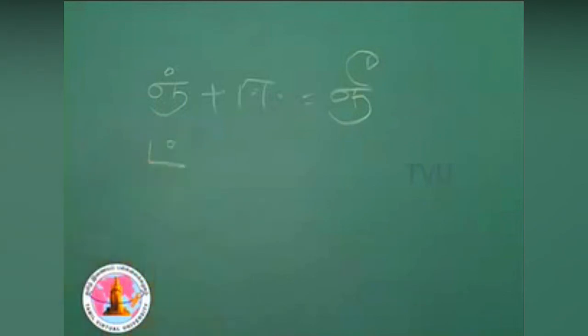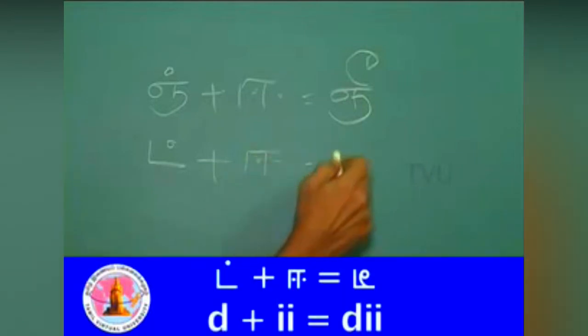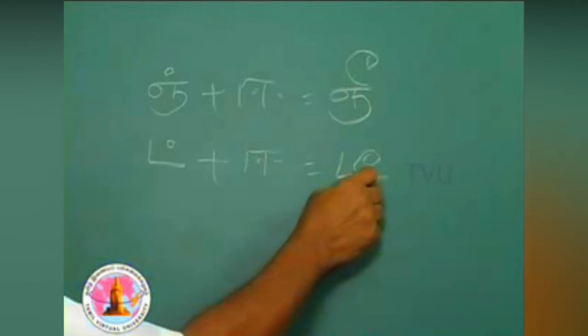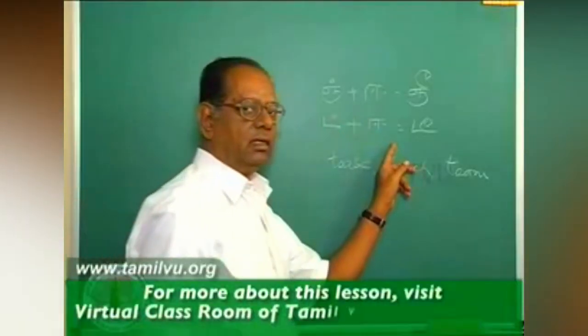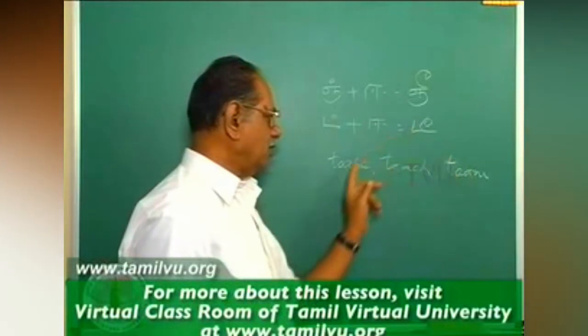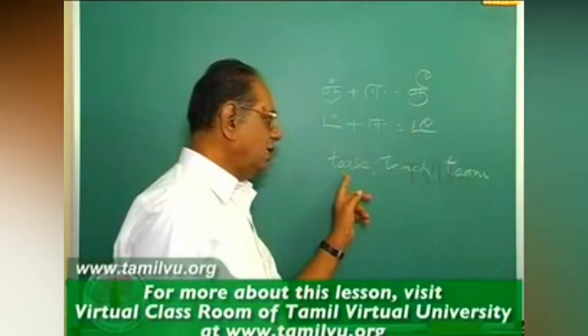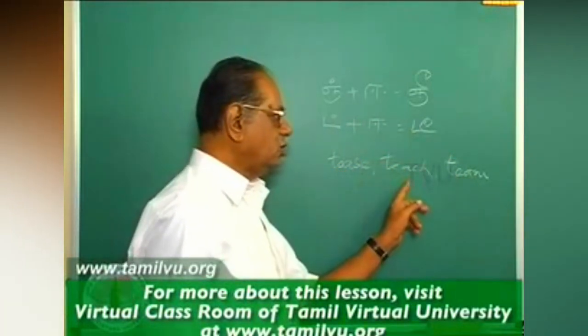Next letter is itch plus ee, tee. See how this is being written. In the middle, you start the marker, go up, and end it with a circle, round it off. So this is called ti. This is it plus ee, tee, as pronounced in the words tees, teach, and team.